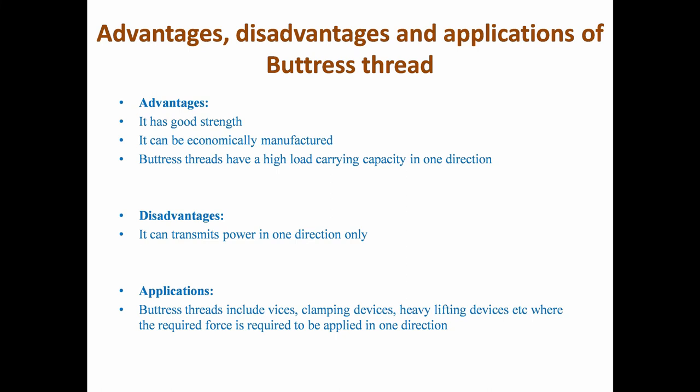Advantages of the buttress thread include good strength, economical manufacture, and a high load carrying capacity in one direction. The main disadvantage is that it can transmit power in one direction only. Applications of buttress threads include vices, clamping devices, and heavy lifting devices, wherever the required force is to be applied in one direction.